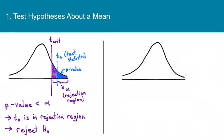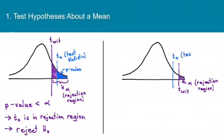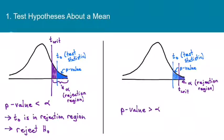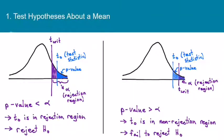On the other hand, suppose we have a much smaller alpha so that the critical value is further out, and our test statistic falls in the clear region. In that case, the p-value would be larger than alpha. In order for the test statistic to fall in the clear region, the p-value has to be larger than alpha. Whenever the p-value is larger than alpha, the test statistic is in the non-rejection region, and we fail to reject H-naught.